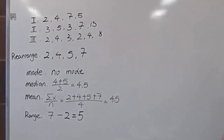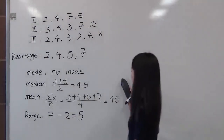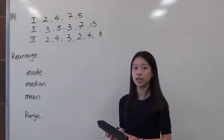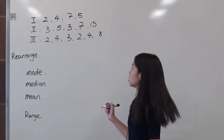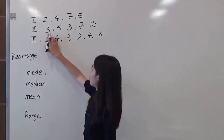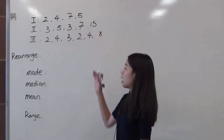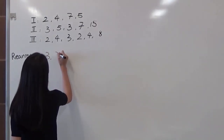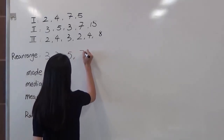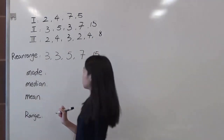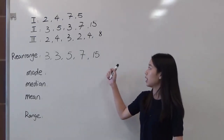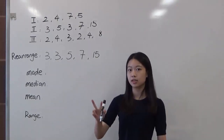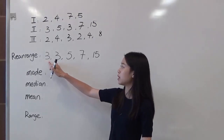Now we move to the second scenario. We have to rearrange again since we need to find the median. Our second data set has the numbers 3, 5, 3, 7, and 15. I'll arrange it in ascending order: 3, 3, 5, 7, and 15. We have 5 numbers in this data set, and number 3 appears twice. So the mode will be number 3.